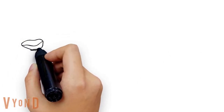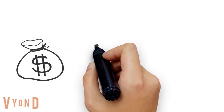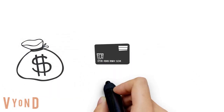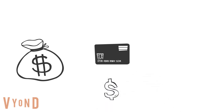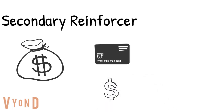Secondary reinforcers are motivators that motivate you because they're associated with primary reinforcers. Money is a great example. You aren't born naturally wanting money. You learn that money is associated with buying food, buying water, shelter, and things like that. And that's why money motivates.